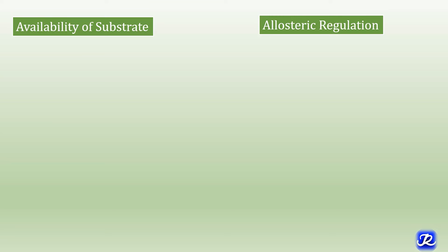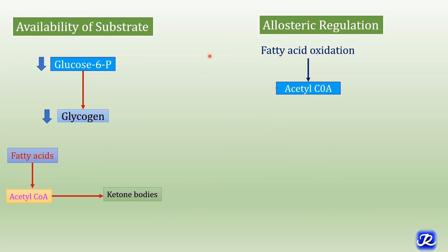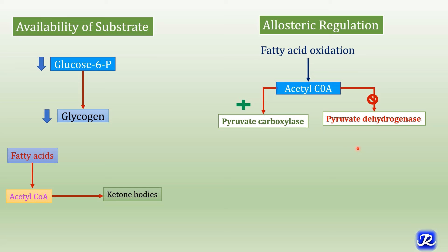To summarize: the first mechanism is availability of substrate. In fasting and starvation, decreased glucose and glucose 6-phosphate inhibit glycogen synthesis. There is increased lipolysis and fatty acid oxidation, raising acetyl-CoA production, which is diverted to ketone body synthesis. Regarding allosteric regulation, increased acetyl-CoA allosterically activates pyruvate carboxylase, inhibits pyruvate dehydrogenase, and increases gluconeogenesis. Increased citrate allosterically inhibits phosphofructokinase 1, decreasing glycolysis.